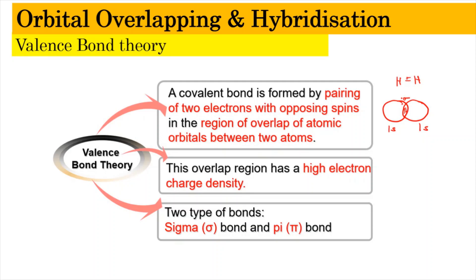This overlapping region has a high electron density. In this chapter we're going to look at two types of bonds: the sigma bond and the pi bond. The sigma bond will be covered in the next slide.